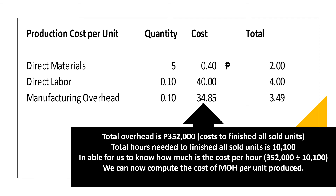Next is the manufacturing overhead. Total overhead is 352,000 pesos — that is the cost to finish all sold units. The total hours needed to finish all sold units is 10,100 hours. To know how much is the cost per hour, we divide 352,000 by 10,100, giving us the cost of manufacturing overhead per unit produced.